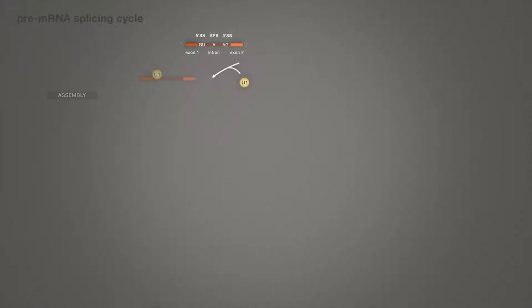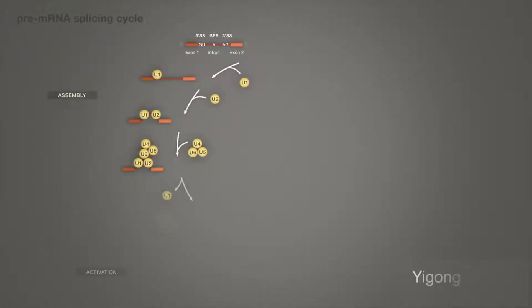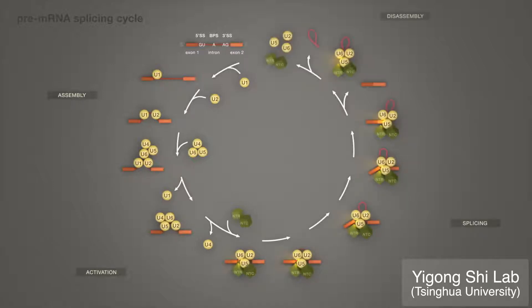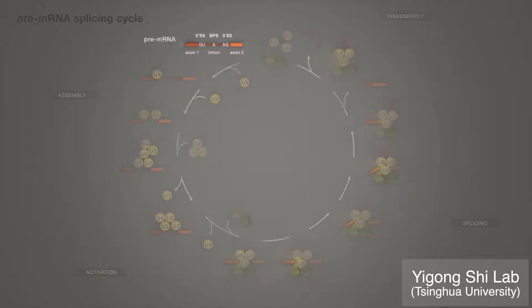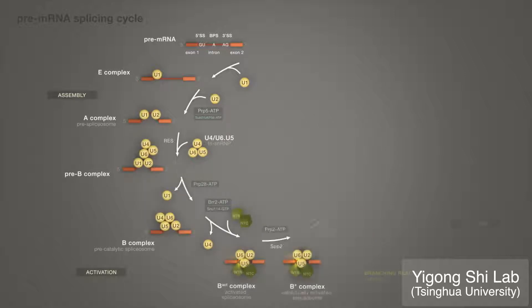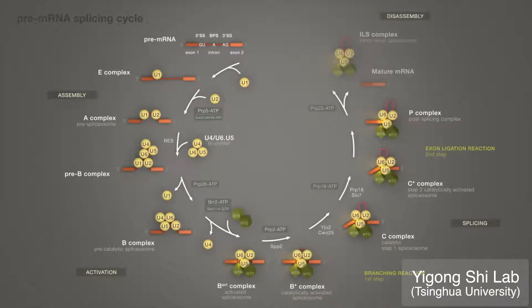The pathway is a complex cycle of RNA protein assembly, activation, splicing, and disassembly. Distinct components of highly dynamic spliceosome machinery function in an orderly fashion and catalyze each two-step splicing reaction.